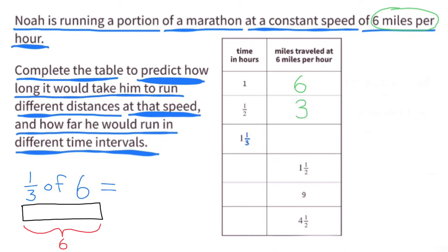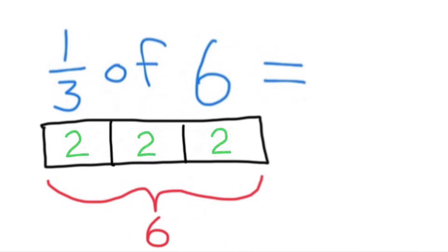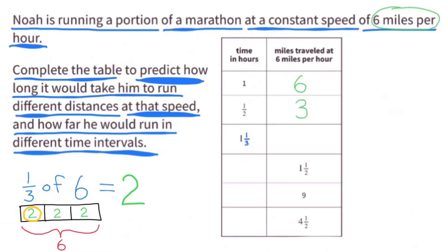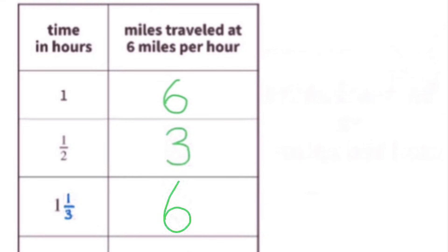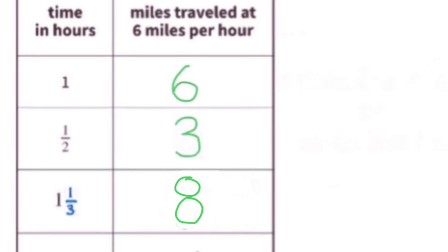Imagine this block represents 6. When we cut this block into 3 equal pieces, each piece is worth 1 third of 6. 2 plus 2 plus 2 equals 6, so 1 third of 6 is 2. So in 1 third of an hour, he could run 2 miles. At 6 miles an hour, in 1 hour he could run 6 miles, and in 1 third of an hour he can run 2 miles. So if he ran 6 miles an hour for 1 and 1 third of an hour, he could run 8 miles.